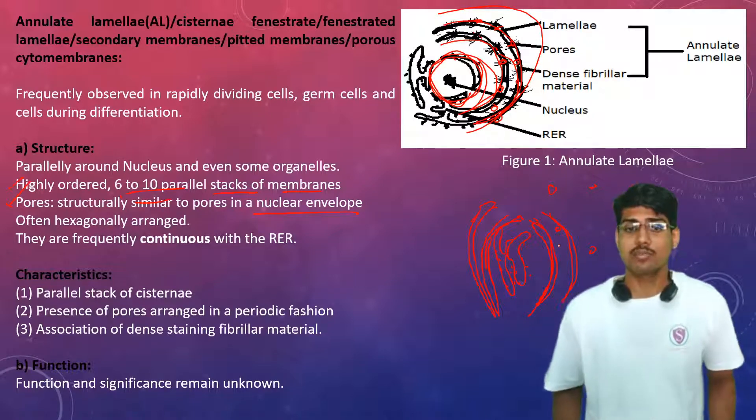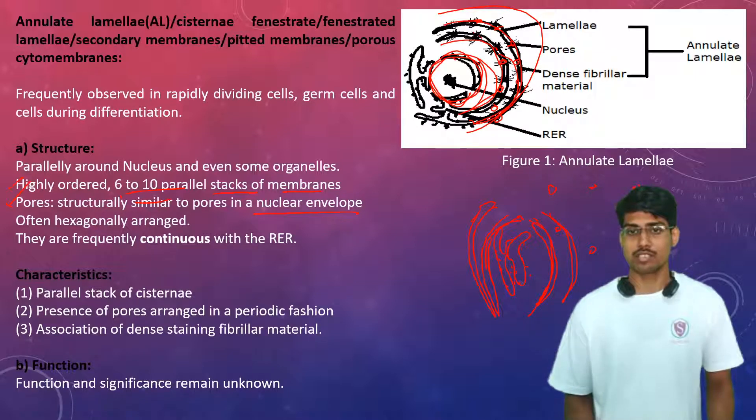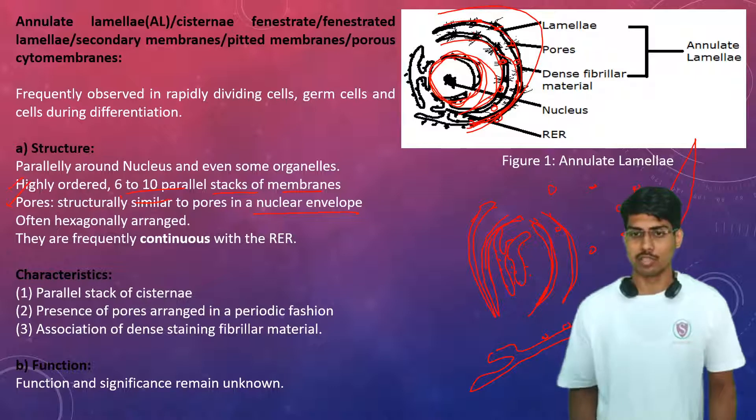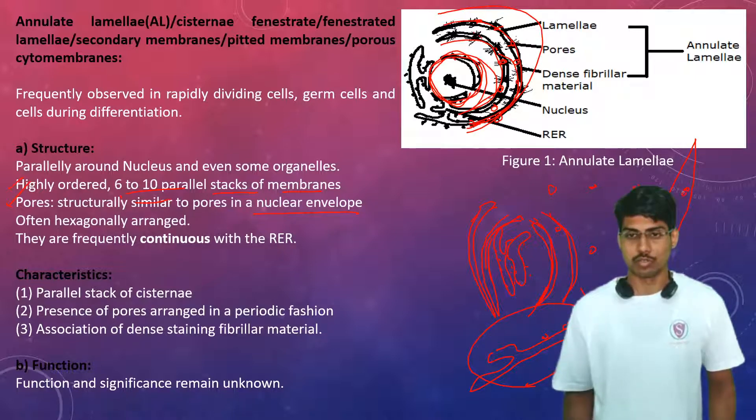They are frequently continuous with rough endoplasmic reticulum. Many times it is observed that these annulate lamellae are continuous with the rough endoplasmic reticulum. Here it will be the endoplasmic reticulum, and this part will be the rough endoplasmic reticulum. They are found to be in continuation with this rough endoplasmic reticulum structure.